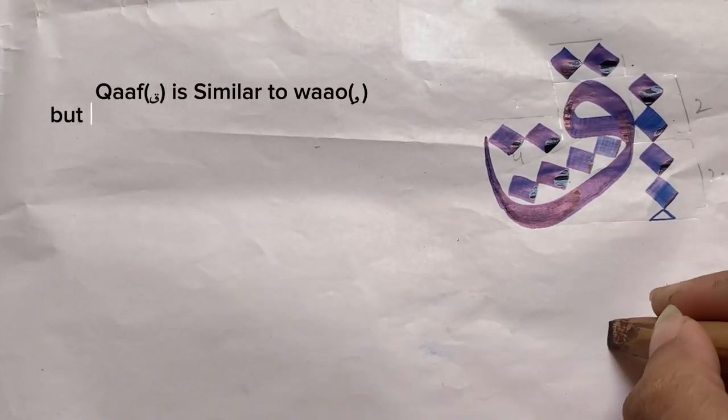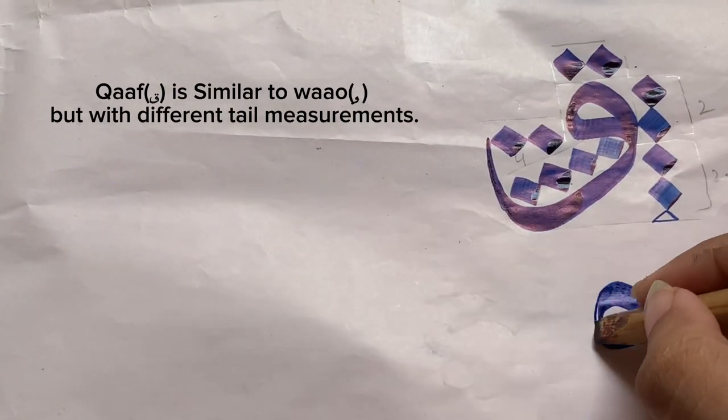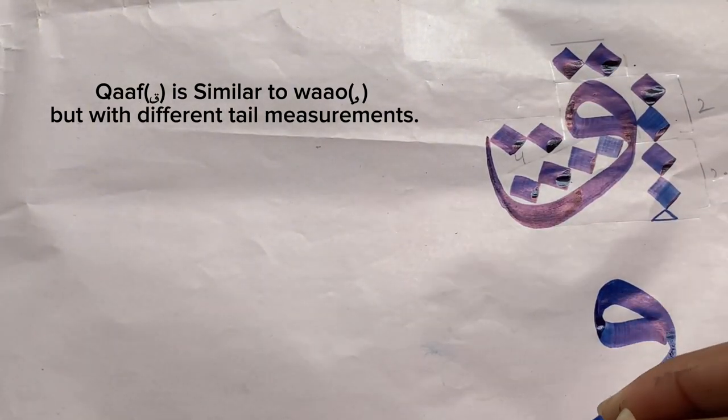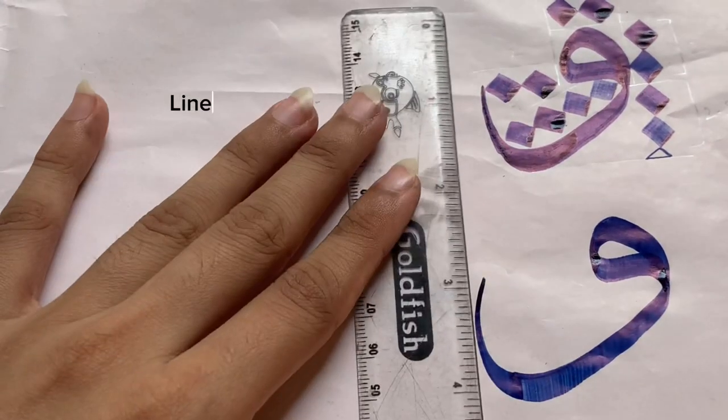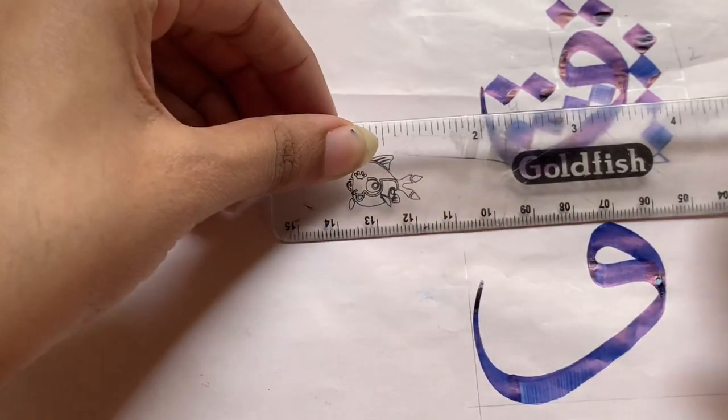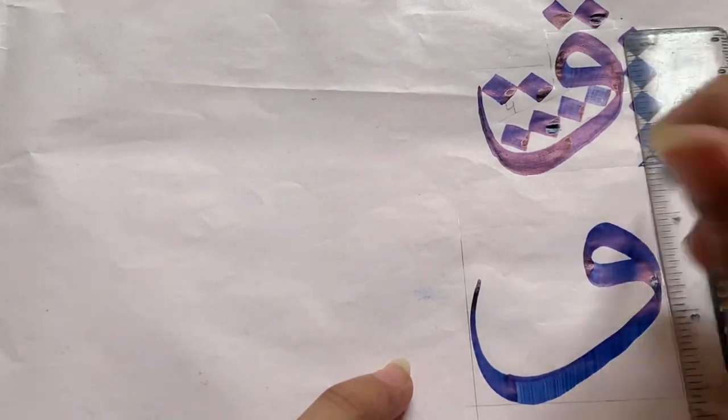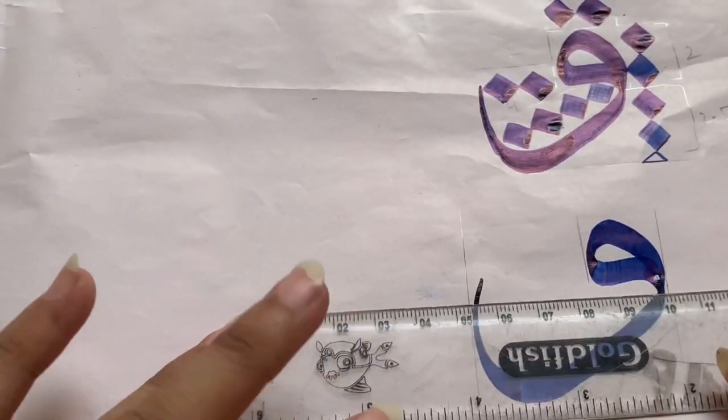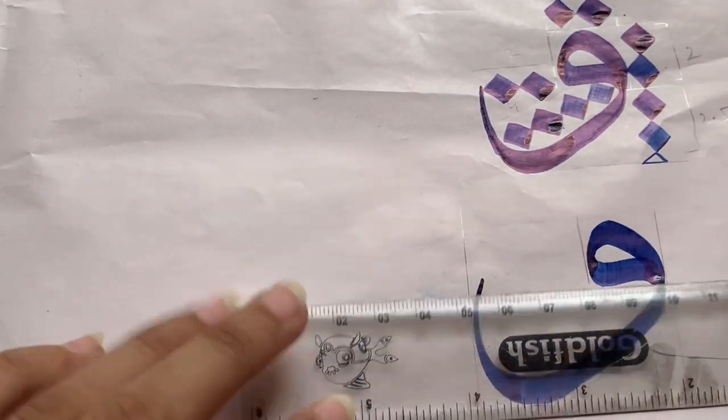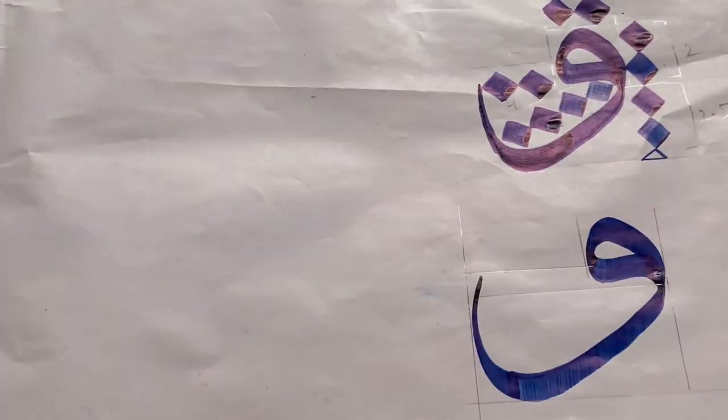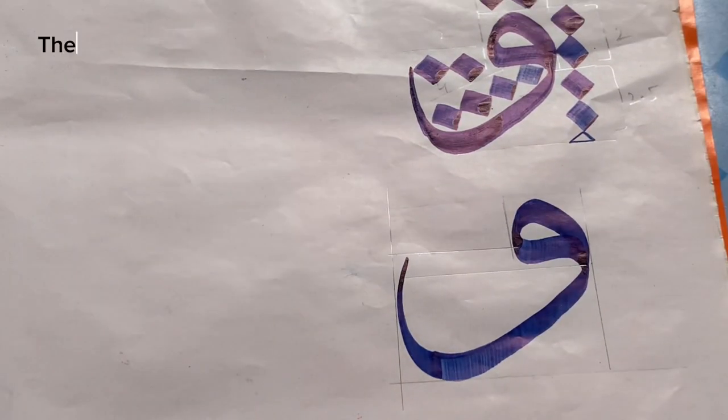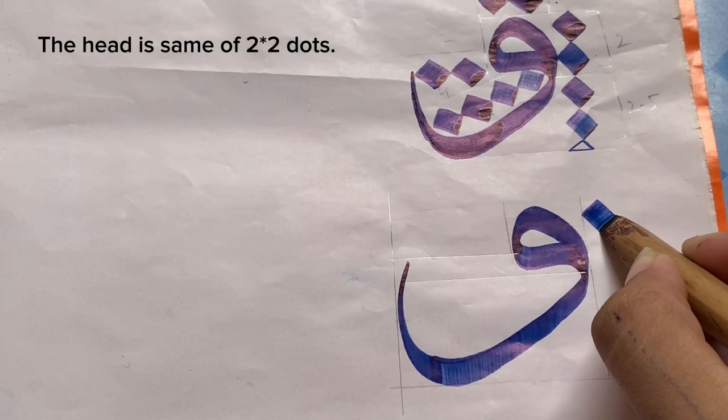Qaaf is similar to waw, but with different tail measurements. The head is the same: two by two dots.